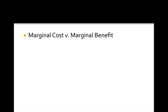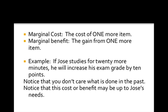Marginal cost versus marginal benefit. This is the idea that marginal cost is the cost of one more item. Marginal benefit is the gain you get from one more item. So for example, if Jose studies 20 more minutes, he'll increase his exam grade by 10 points. His cost would be that 20 minutes of time, his benefit would be the 10 points on his exam.